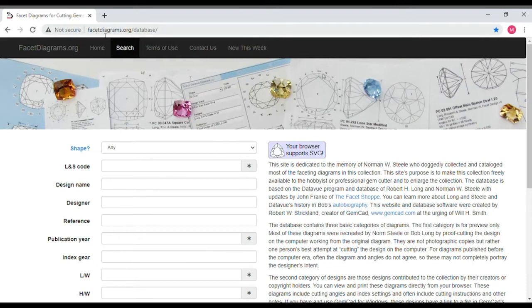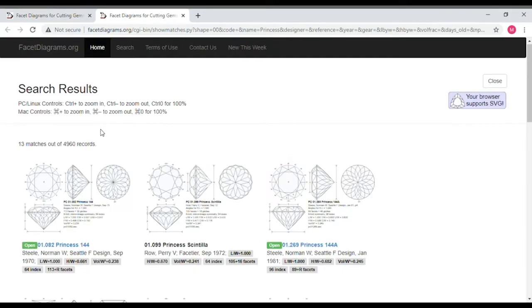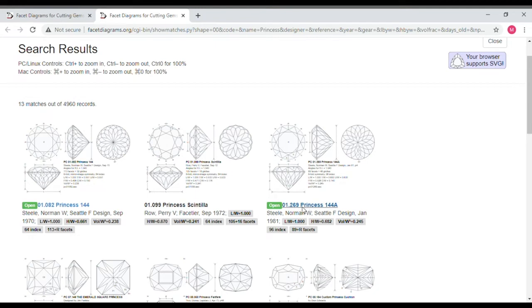I think I will cut these two gemstones into a design by Norman W. Steele that he called Princess 144A. This design was originally published in the Seattle Faceters Guild Newsletter in January 1981.